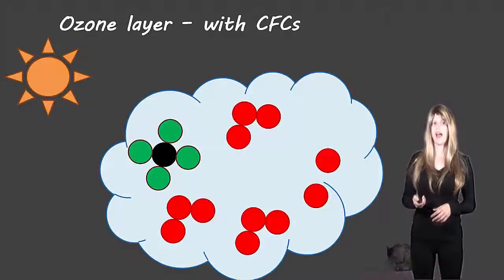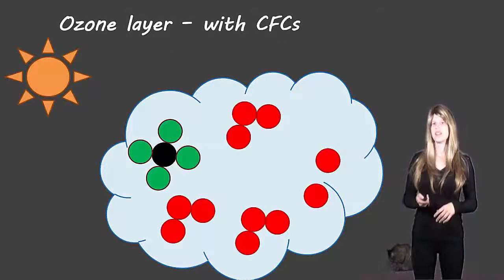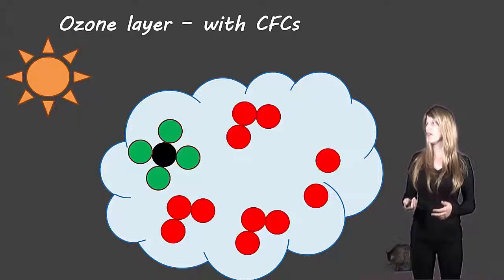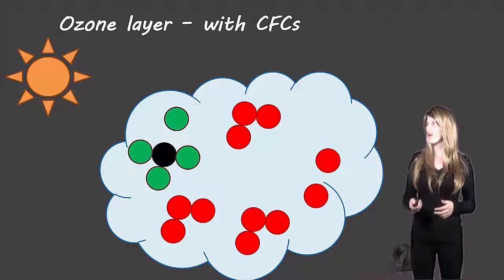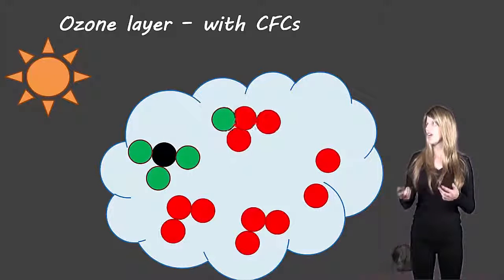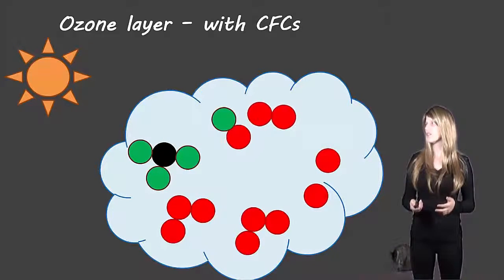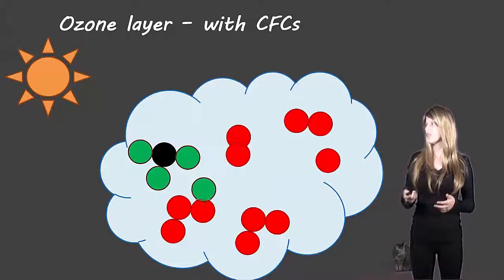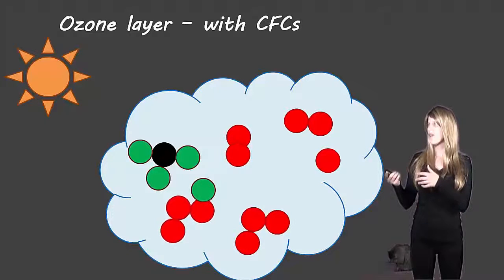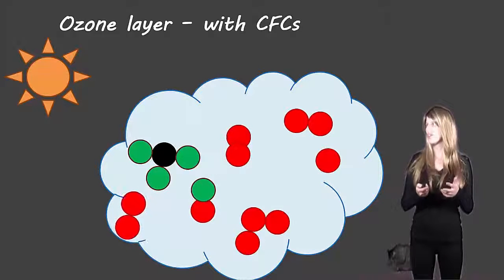So let's take a look at how that happens. The one in black and green there is a chlorofluorocarbon and if UV light hits that, one of the chlorines or one of the fluorines can come off and interact with an ozone molecule. That will split it off and leave some oxygen molecules.